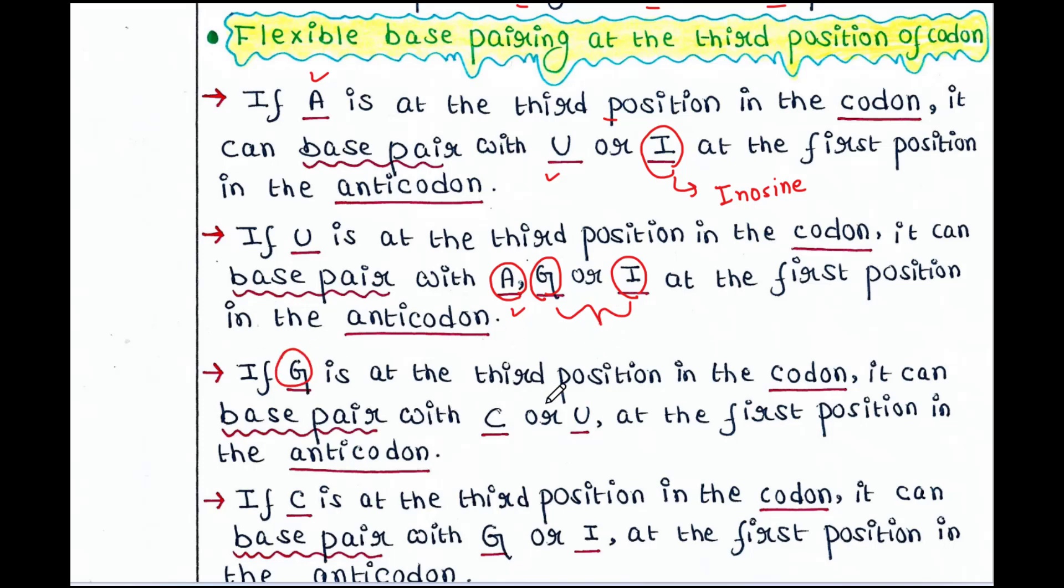If G is at the third position in the codon, it can base pair with C or U at the first position in the anticodon. So, G pairs with C. This is usual base pairing. But G pairs with U. It is unusual base pairing. That means wobble base pairing.